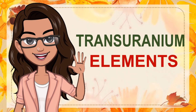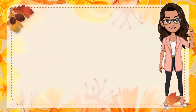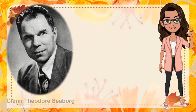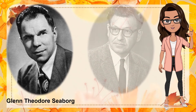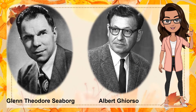Transuranium elements are elements whose atomic numbers are greater than 92, the atomic number of uranium. They are all unstable and undergo radioactive decay. Many of the transuranium elements were prepared using particle accelerators, and much of this work was facilitated by a group of scientists led by the American chemist Glenn Theodore Seaborg and later nuclear scientist Albert Ghiorso at the University of California. The most effective way of preparing transuranium elements, specifically the lower members of the series — elements 93 to 95 — was through neutron bombardment.